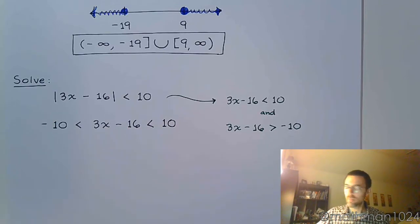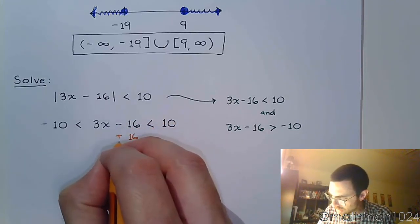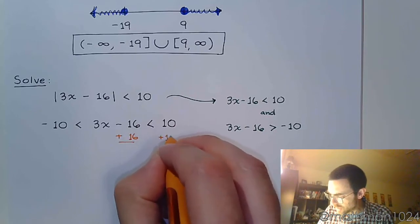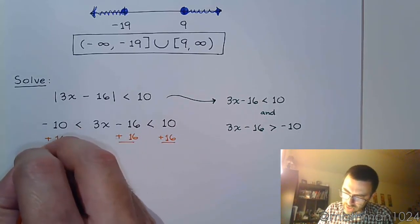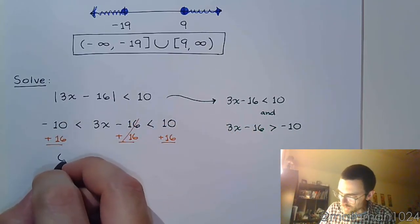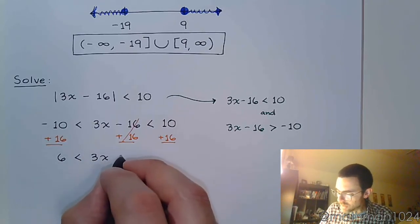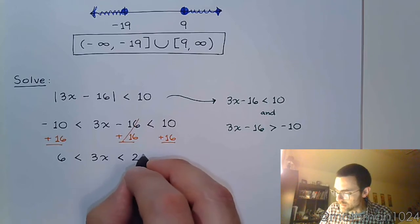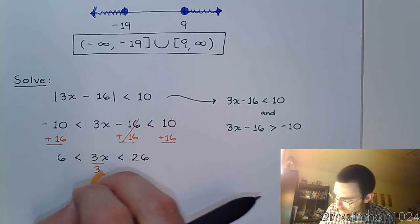Let's talk about the steps that we would take. The first step is to add 16. We did compound inequalities not that long ago and we know that what I do to one part of this three-part inequality I do to all three parts. So 6 is less than 3x which is less than 26, and we get to finish this by dividing all three parts by 3.